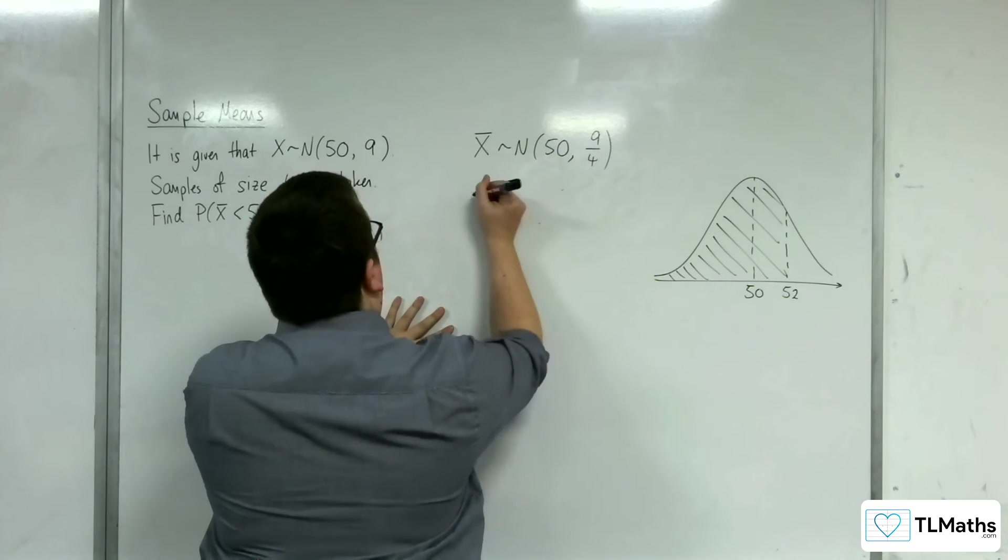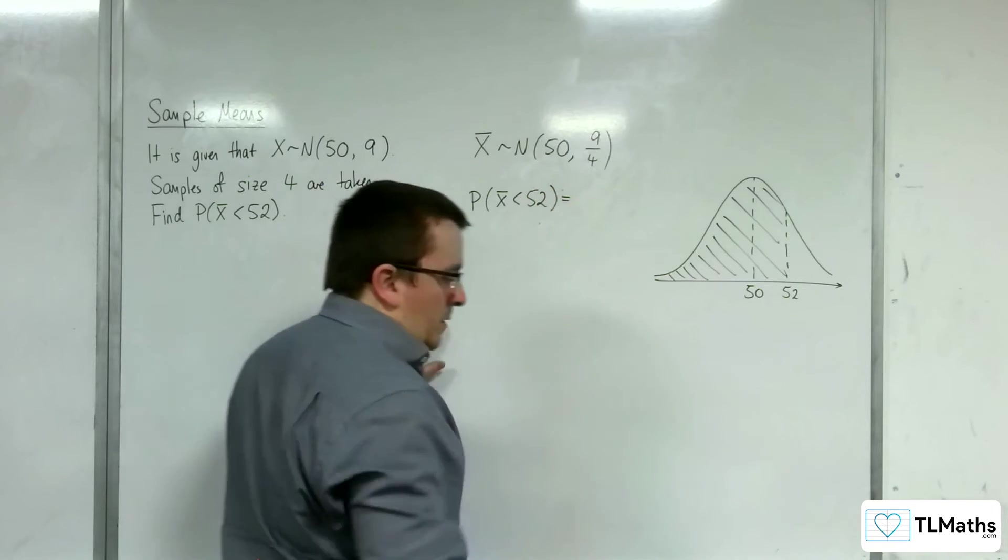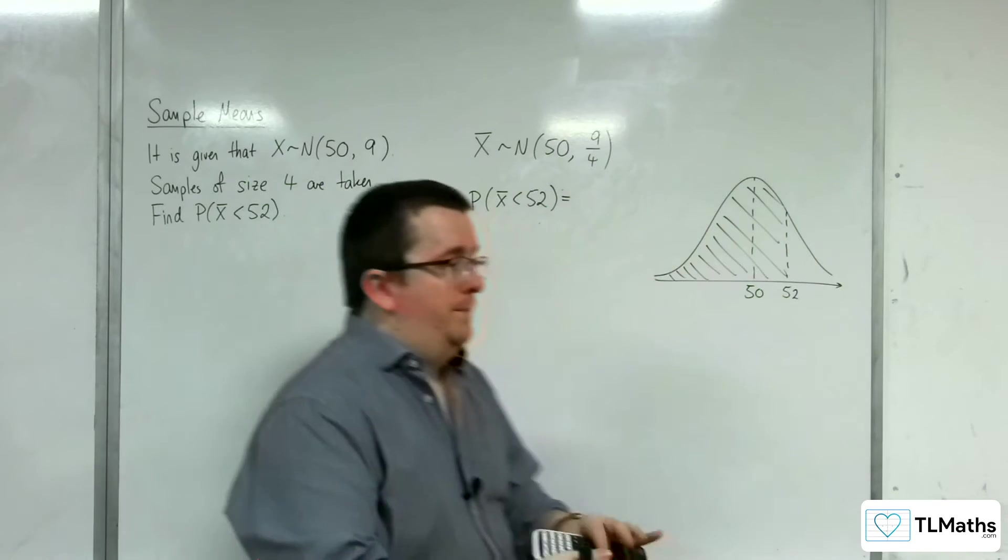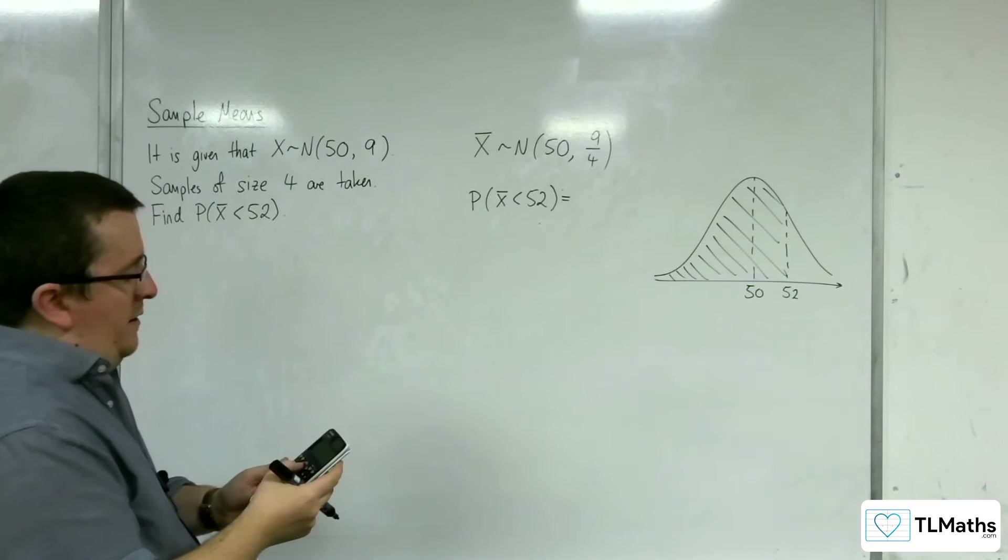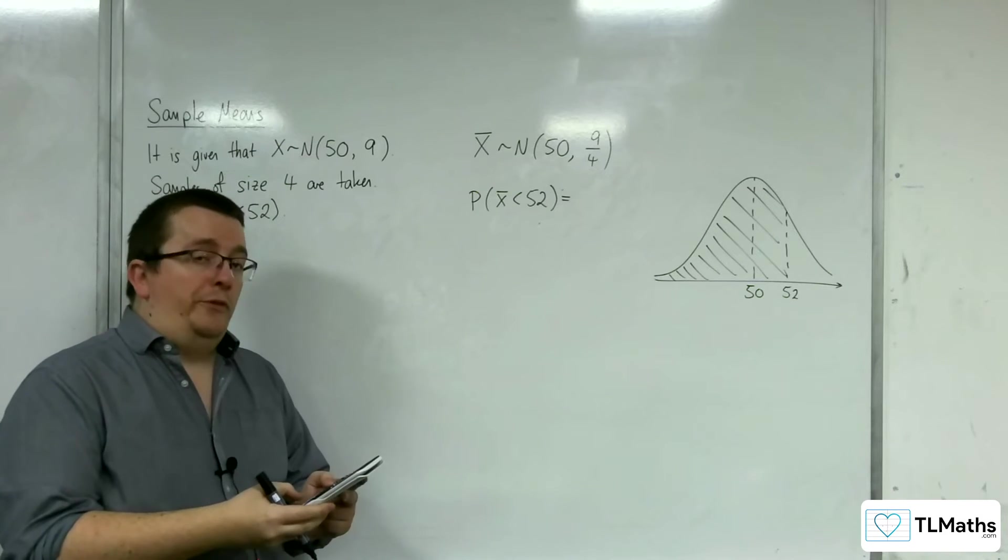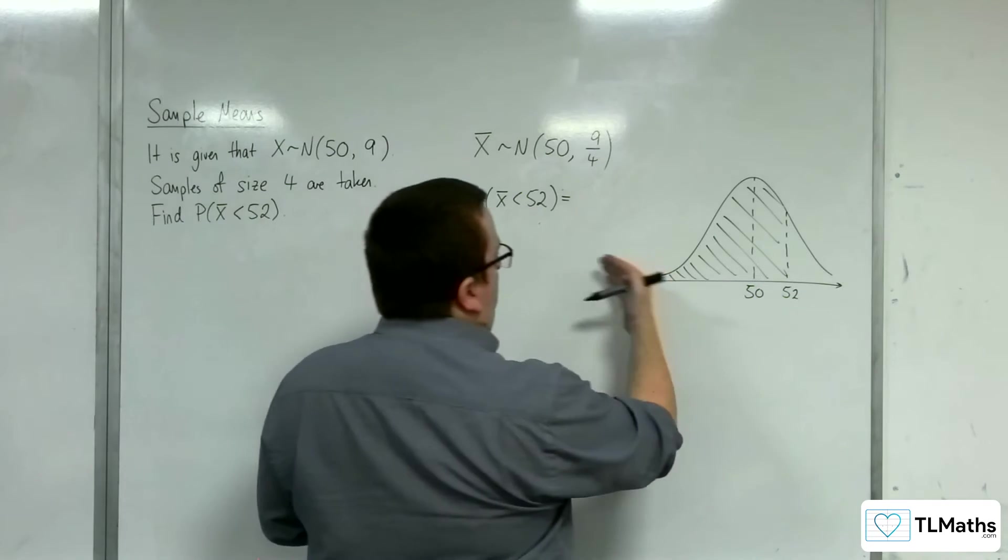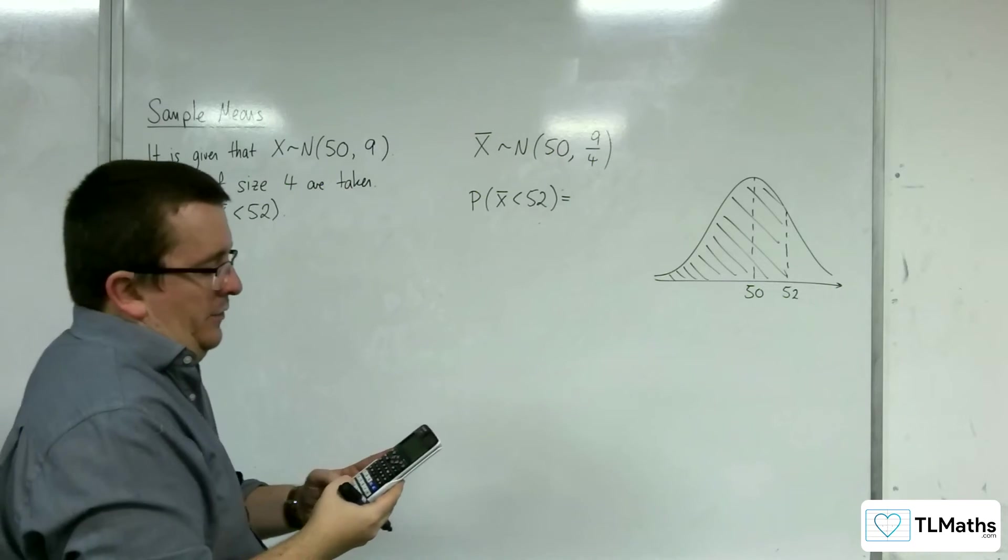So I'm going to go straight to my calculator. Now, when I go on to number 7, so menu and then number 7, normal CD, the lower value is all the way down here. So I'm going to put in, like, minus 10,000.